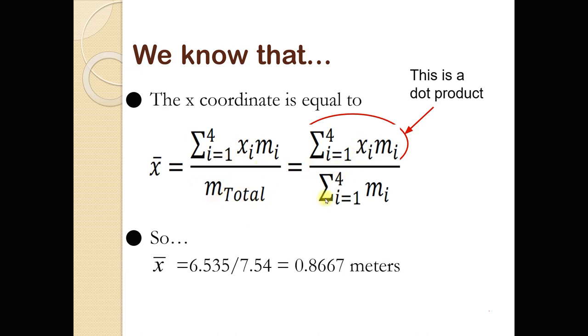And, the total mass can also be expressed as a sum. It's just the sum of the masses. So the sum from i equals 1 to 4 of m sub i. And again, that numerator is the dot product. So it's the dot product in the numerator divided by the sum of the masses. And this is the result that we should get, this 0.8667 for the x coordinate.